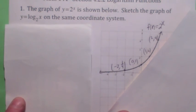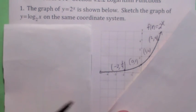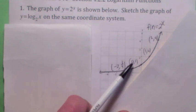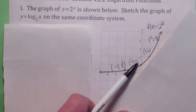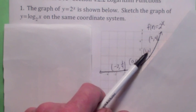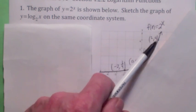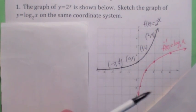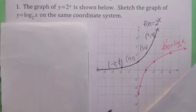The easiest way to find the inverse would be to find some points and switch the coordinates. So 0, 1 becomes 1, 0; 1, 2 becomes 2, 1; 2, 4 becomes 4, 2 — and you get a graph that looks kind of like this. This is the graph of log base 2 of x, which is the inverse function for 2 to the x.